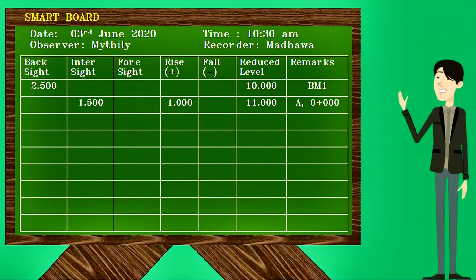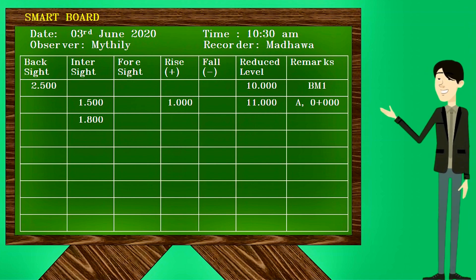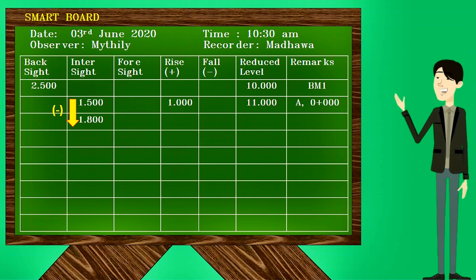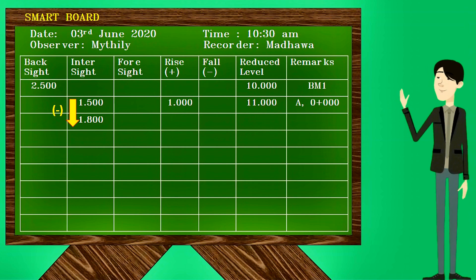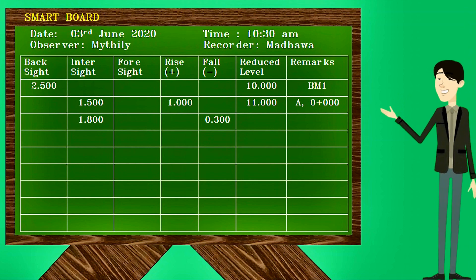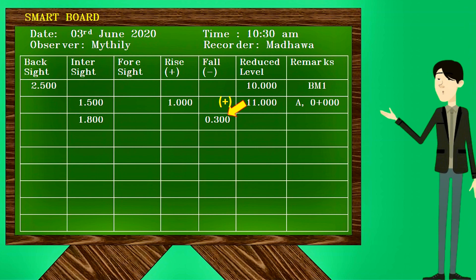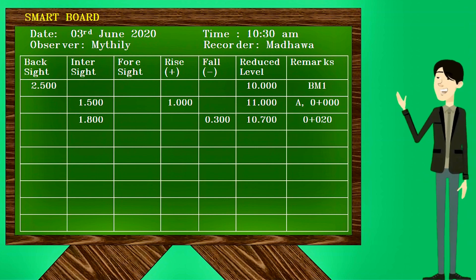We will see how the reading at the 20 meter point is recorded. Since it is an intermediate sight, write the value in the intermediate sight column. Find the rise or fall by deducting the staff reading of 1.8 meters from the previous staff reading of 1.5 meters; the answer is minus 0.3 meters. Put that value in the fall column. Adding the fall value of minus 0.3 meters to the previous reduced level gives the reduced level at 20 meters, which is 10.7 meters.